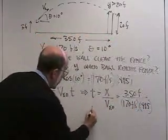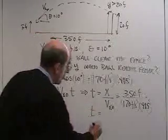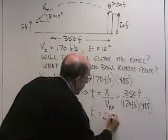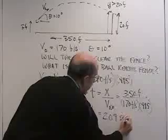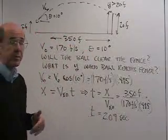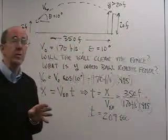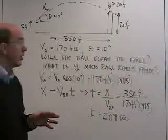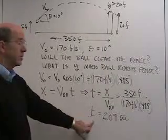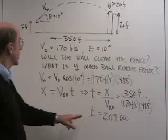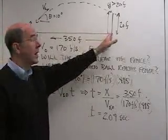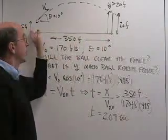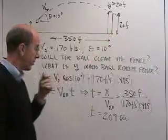And I got that t is equal to 2.09 seconds. So it takes the ball, remember we're talking about no air resistance in this calculation, baseballs do have a fair amount of air resistance, but this hit is going to be a screamer. It's going to take 2.09 seconds to go from the plate to the outfield wall.